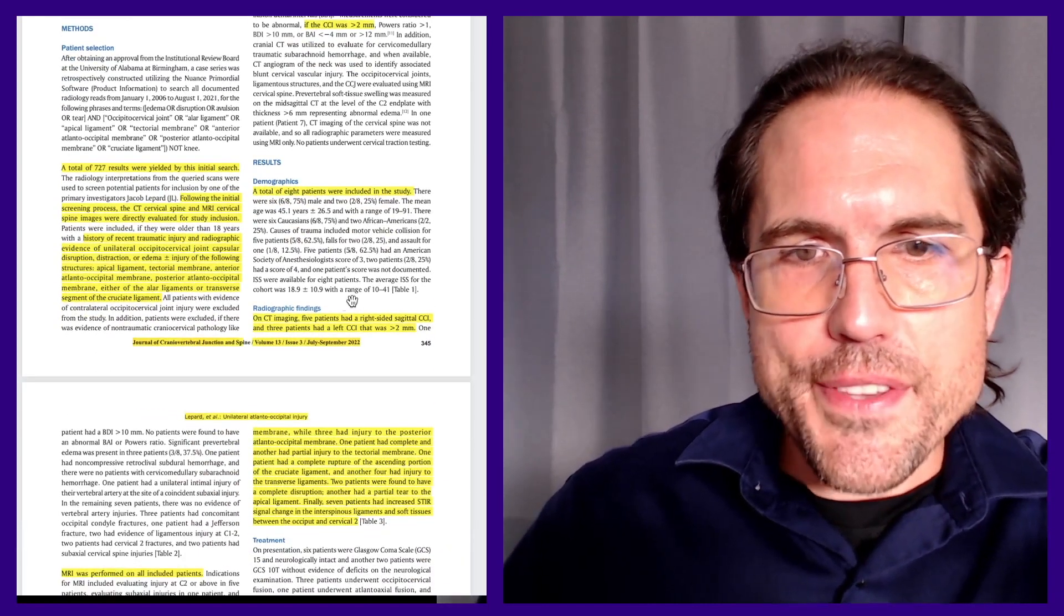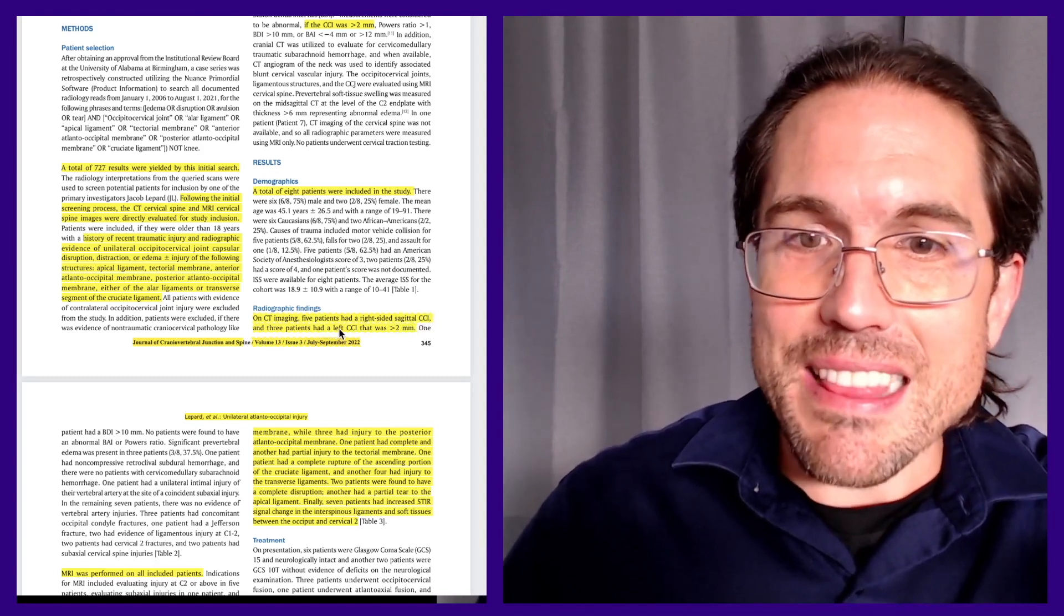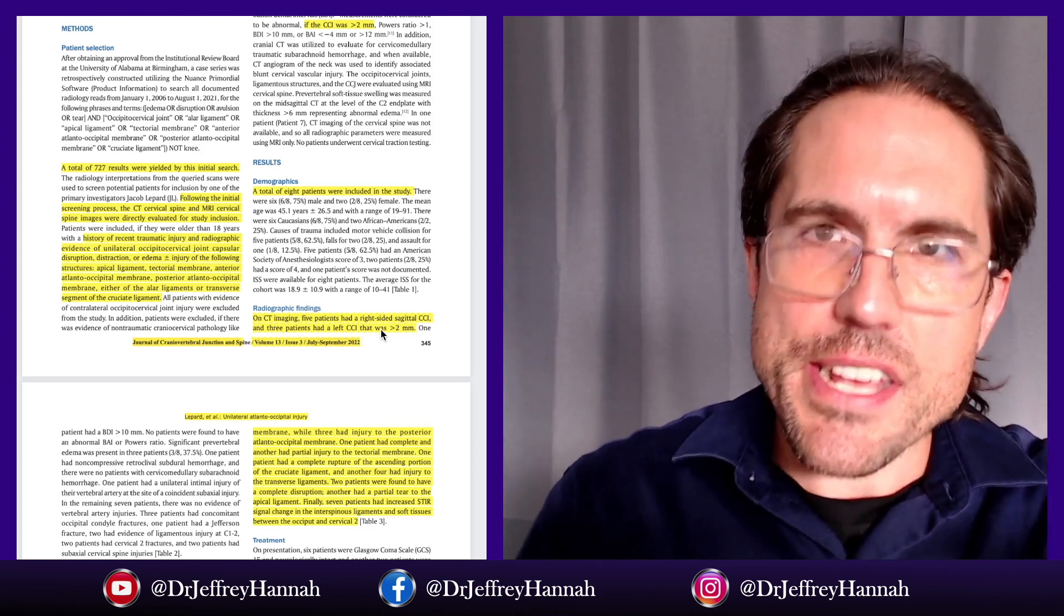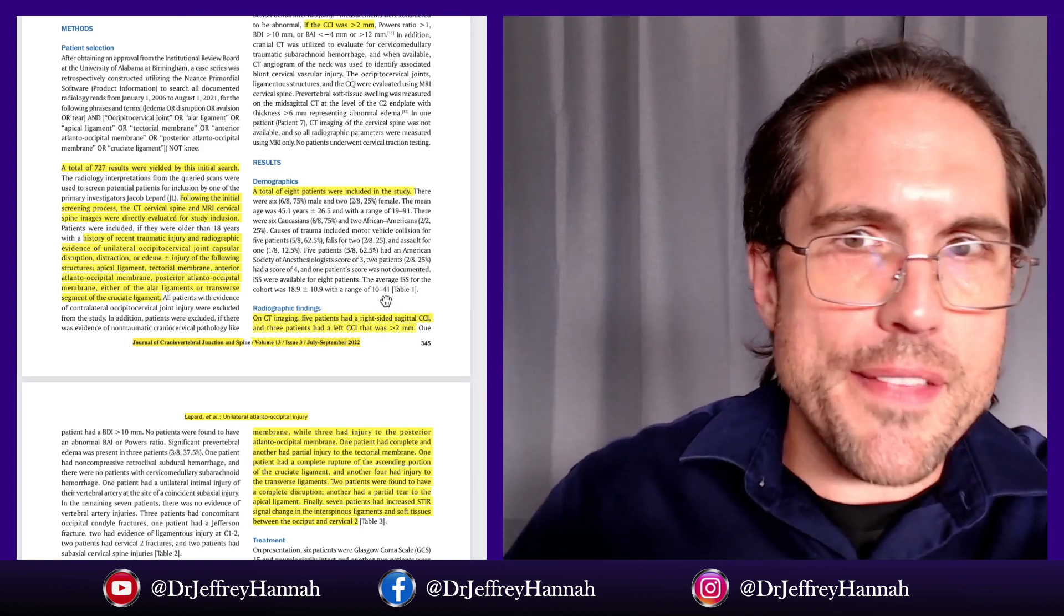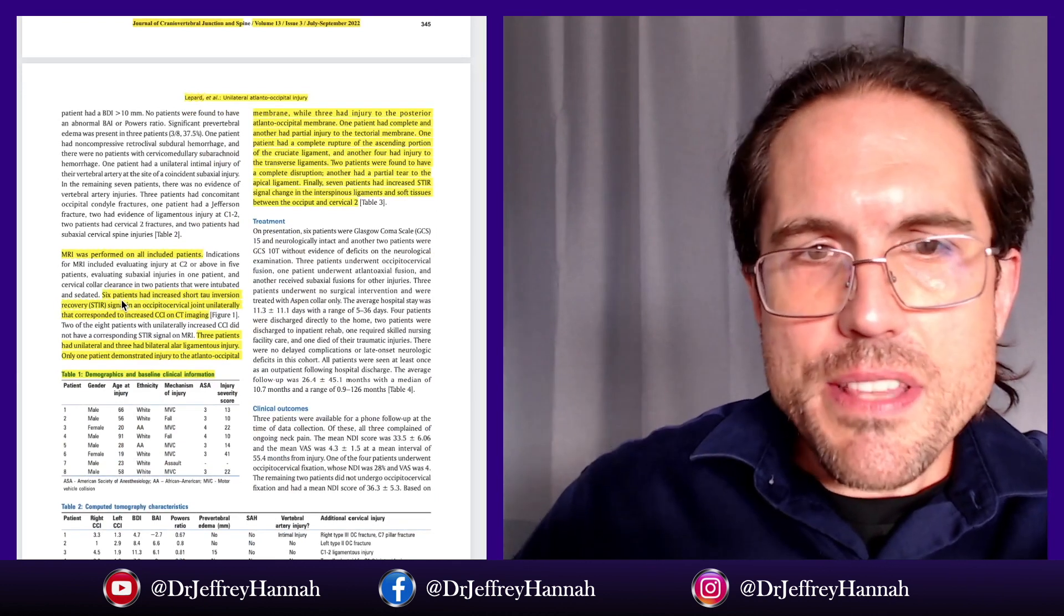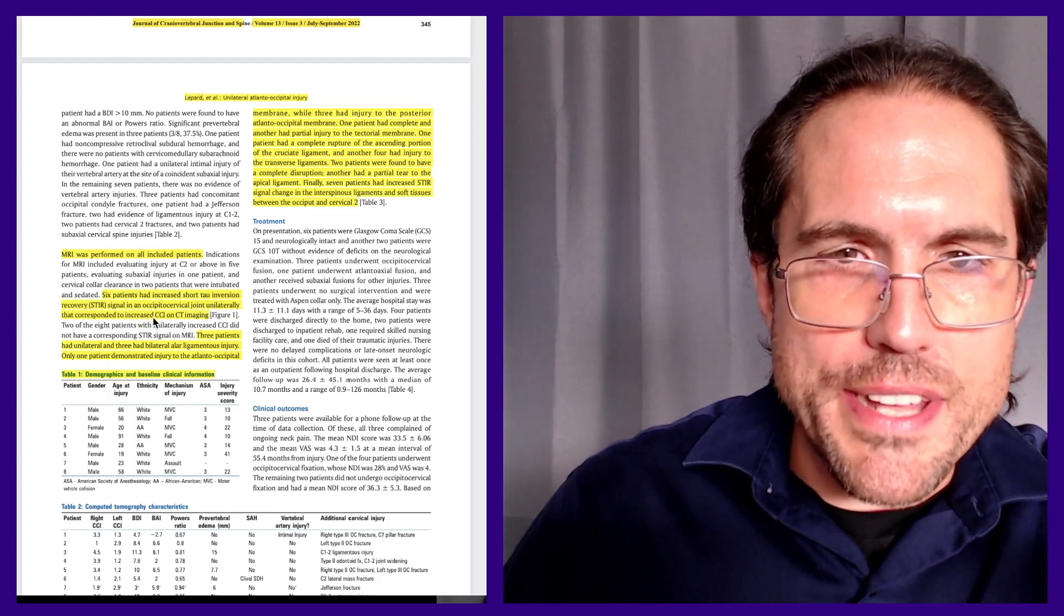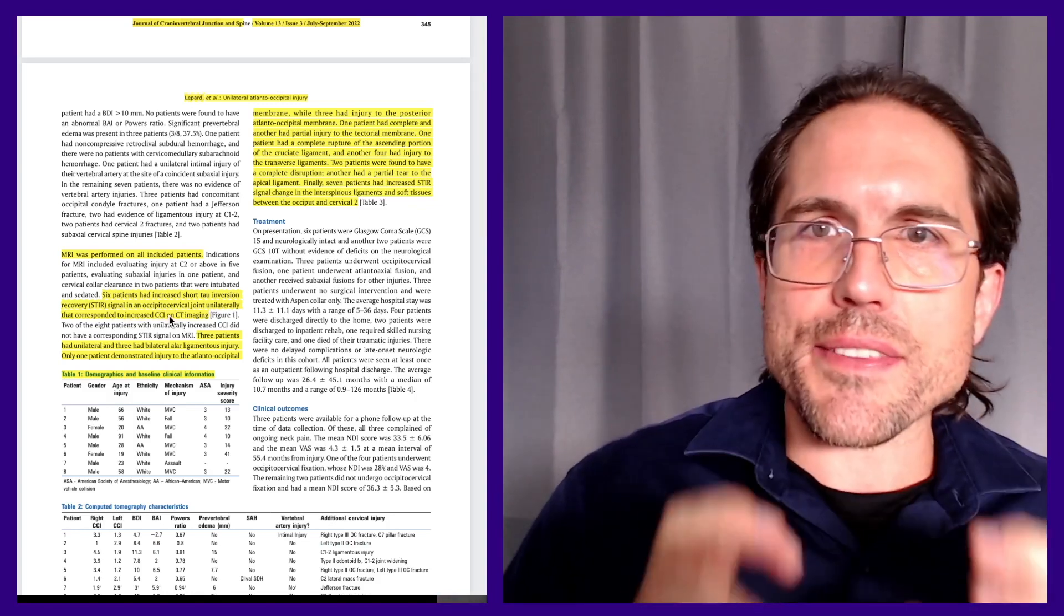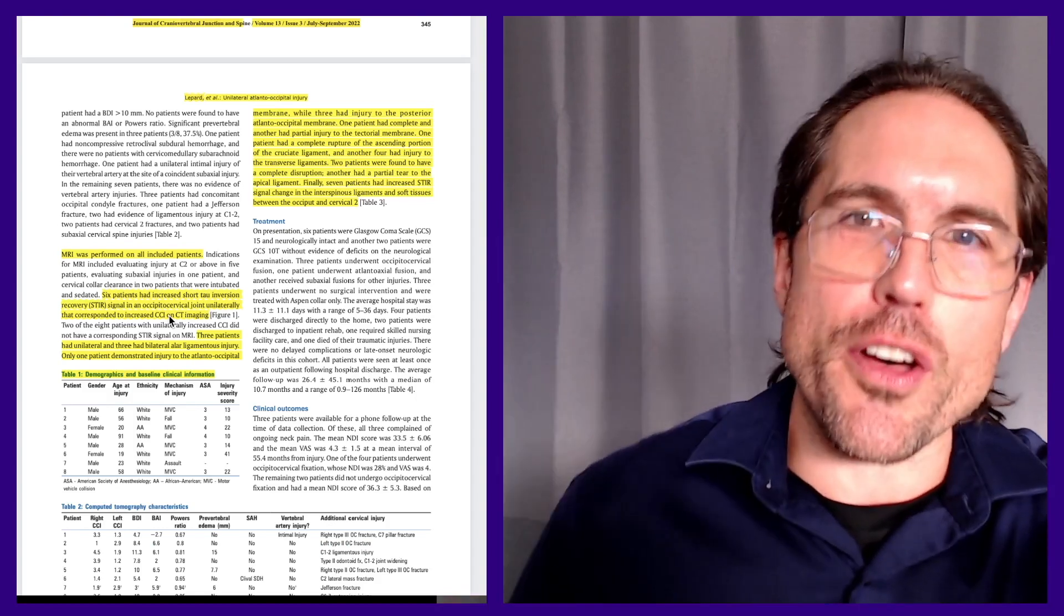Out of those 727, they found eight that actually met their study criteria. Out of the eight, on CT imaging, five people had a right-sided and three had a left cranio-cervical interval that was greater than two millimeters. So there was evidence of some kind of capsular ligament injury between the skull and the C1.